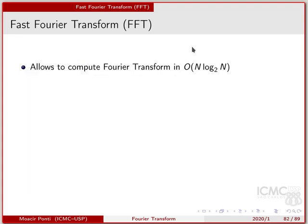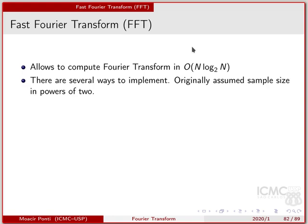So instead of having a computational complexity of N squared, which is the original complexity of the DFT, the FFT allows us to compute the Fourier transform in N log N, which is much faster. There are several ways to implement this algorithm and the original algorithm assumed that the N, the value of N, is a power of 2. So this is the original algorithm. But there are other implementations that does not require that and we are not going to talk about that. I just want to explain the original algorithm that's easier to understand.